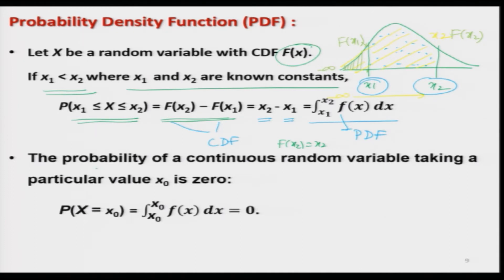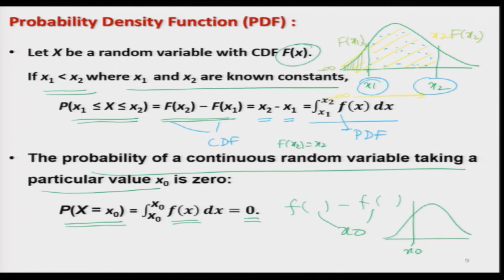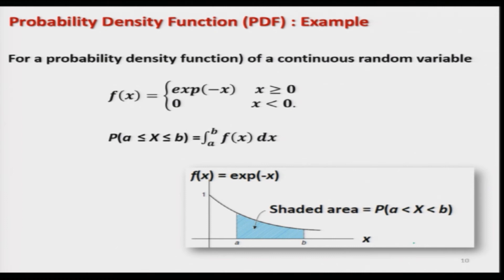If we want to find the probability of a continuous random variable taking a particular value x0, this becomes the integral from x0 to x0 of f(x) dx, which equals 0. From the integration point of view, x0 is only a point and the area of a point is 0. That is the mathematical concept. Let me take an example to explain the application of this.